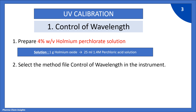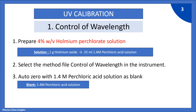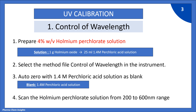The second step is to select the method file 'Control of Wavelength' in the instrument. Then perform auto zero with 1.4 molar perchloric acid solution as blank. After that, scan the Holmium perchlorate solution of 4% from 200 to 600 nm range.